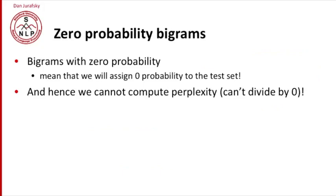So bigrams with zero probability mean that we're going to assign zero probability to the test set. And so we can never compute perplexity. We can't divide by zero. So we're going to need to find a way of dealing with bigrams with zero probability.